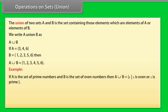Example: If A is the set of prime numbers and B is the set of even numbers, then A union B equals x such that x is even or x is prime. If A union B equals x such that x greater than 5, and B equals x such that x less than 3 or x greater than 5.